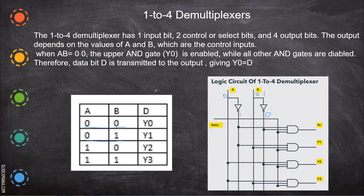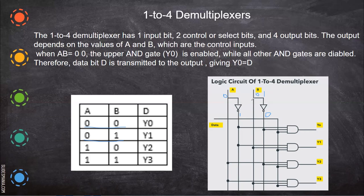This is how demultiplexer works. The value of D is reflected in Y0, Y1, Y2, Y3 based on the two control lines.